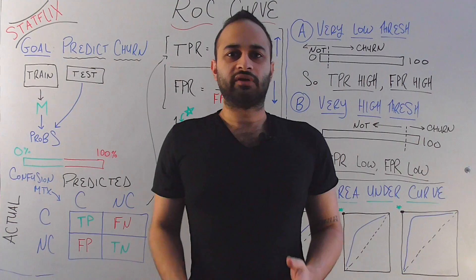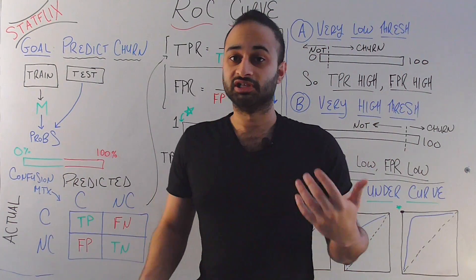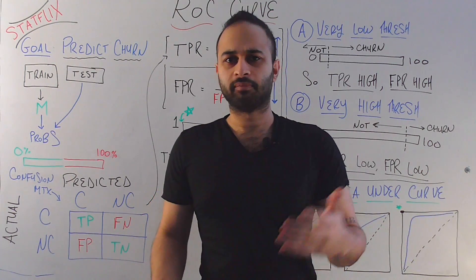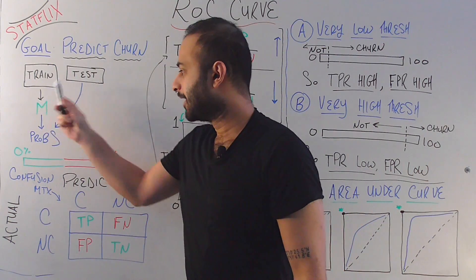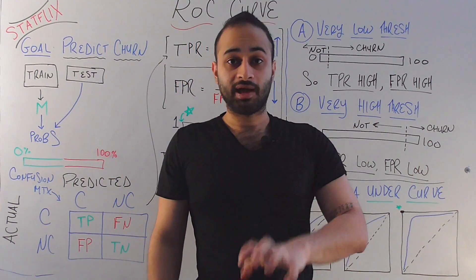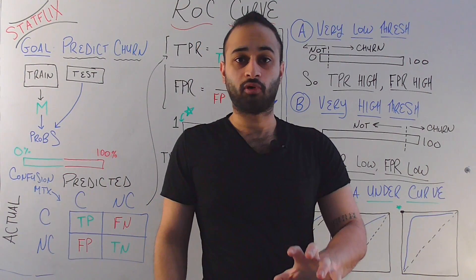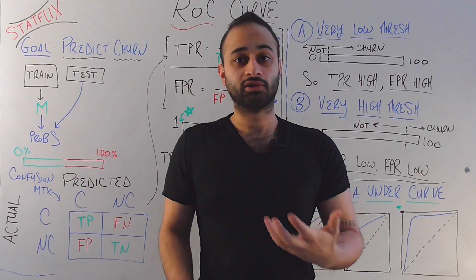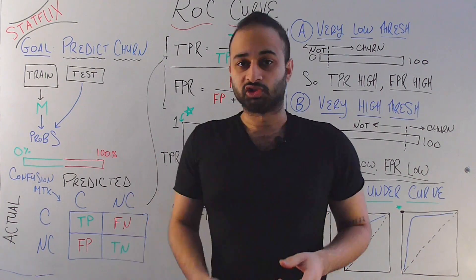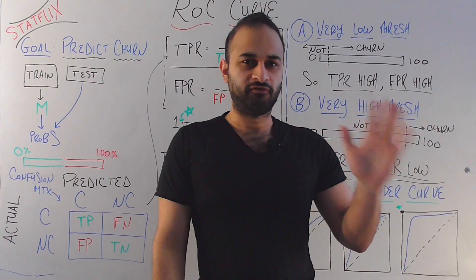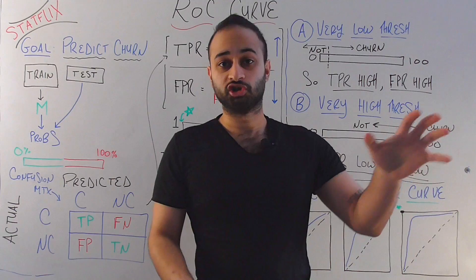Let's go through the machine learning framework. Say you have a big dataset of customers and you split them into a training and testing set. You use the training set to build the model — let's just say it's a logistic regression, called M. Now you use model M, built on the training set, and you feed in your testing set, which the model has never seen before. You output some probabilities for every single customer in the testing set for how likely we predict that customer is to churn — a probability between 0% (very likely not to churn) and 100% (very likely to churn).